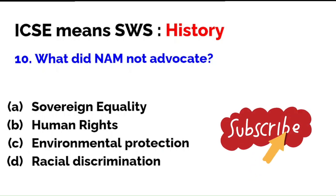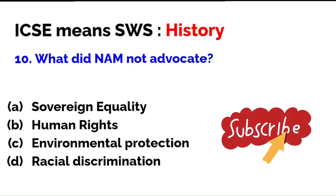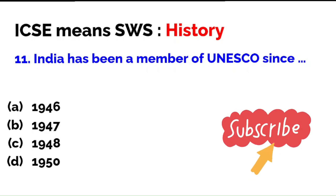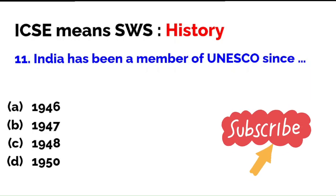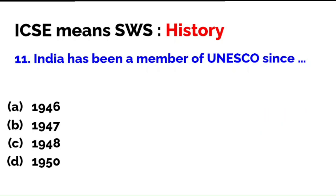What did NAM not advocate? Sovereign equality, human rights, environmental protection, or racial discrimination? The correct answer option is D — racial discrimination. NAM did not advocate racial discrimination. Next: India has been a member of UNESCO since 1946, 1947, 1948, or 1950? The correct answer is A — 1946. It became a member before independence, and it is mentioned in your textbook.